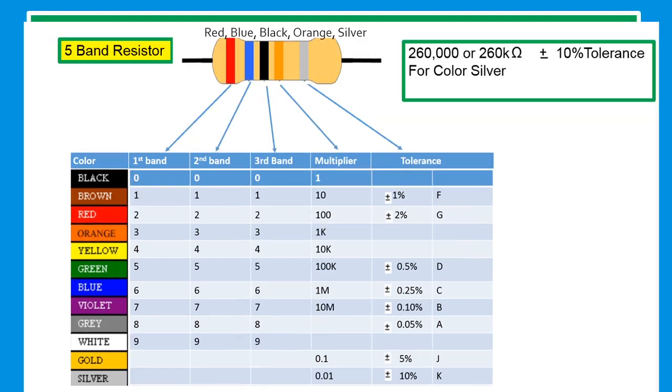Our next topic is five-band resistor. The colors are red, blue, black, orange, and silver. For red, that's two. The next one is blue, which is six.